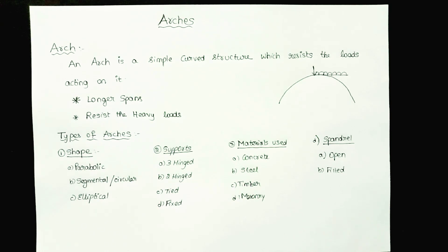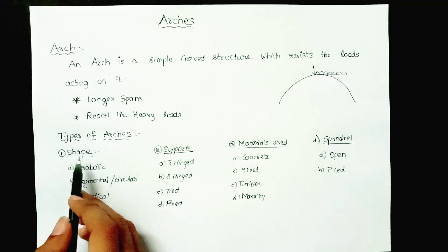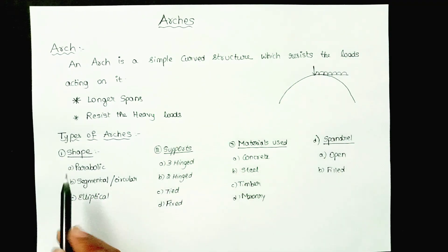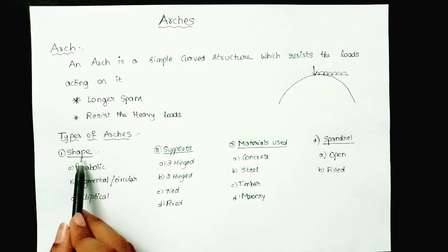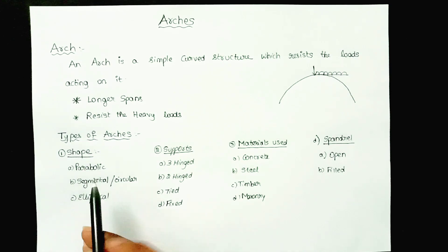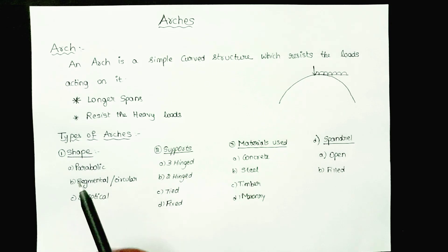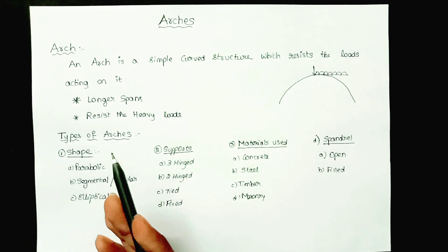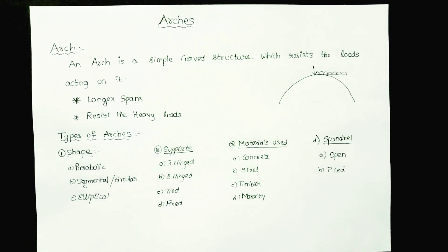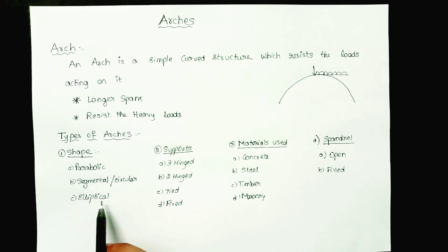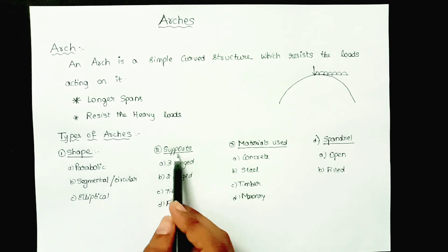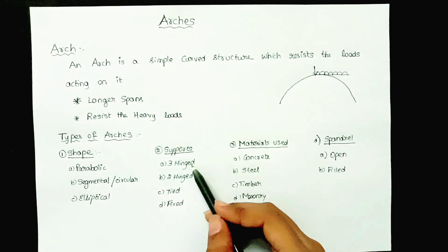Coming to classification based on shape, an arch can be constructed in a parabolic, segmental, circular, or elliptical shape. Each shape has its own geometrical properties, and by using those properties we analyze the arch. These are known as parabolic, segmental (also known as circular), and elliptical arches.